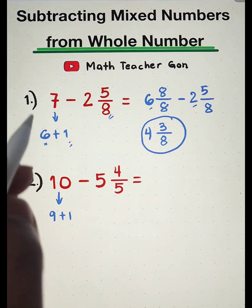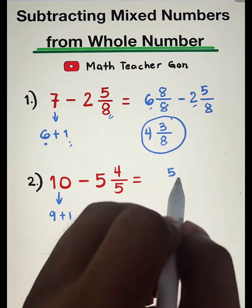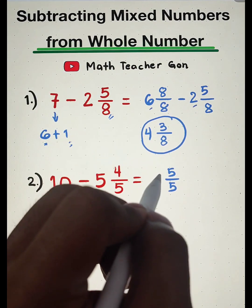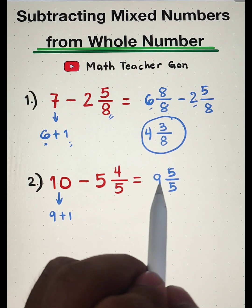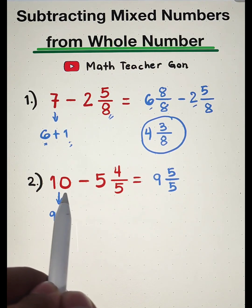And this whole number 1 will be converted into fraction, and look at your denominator 5. Meaning, this 1 will be converted into 5 over 5. And then copy the whole number 9. So what we have now is 9 and 5 over 5, that is equivalent to 10.